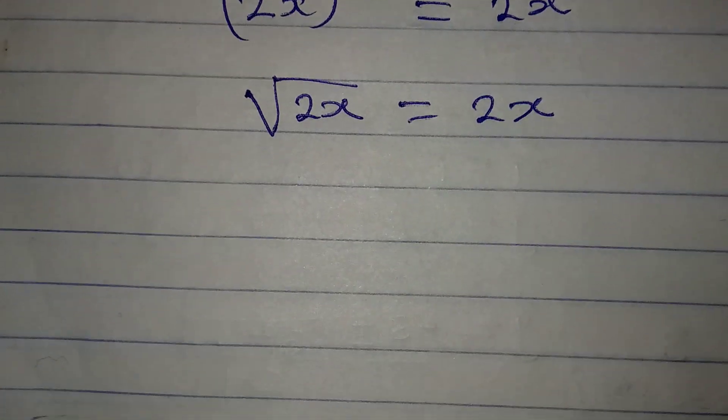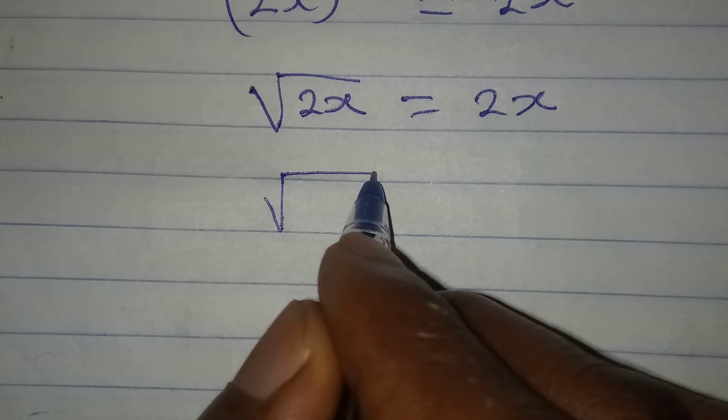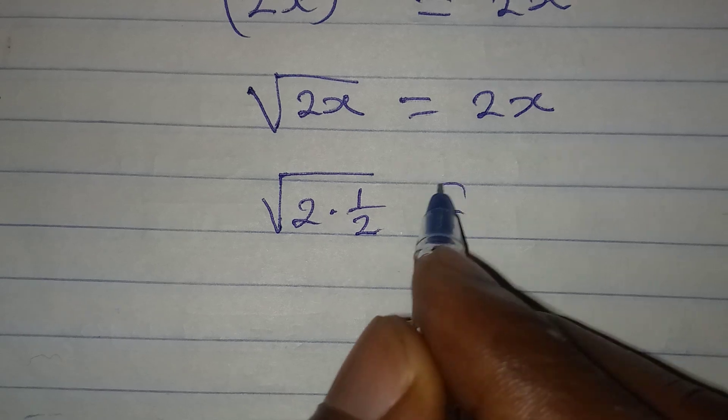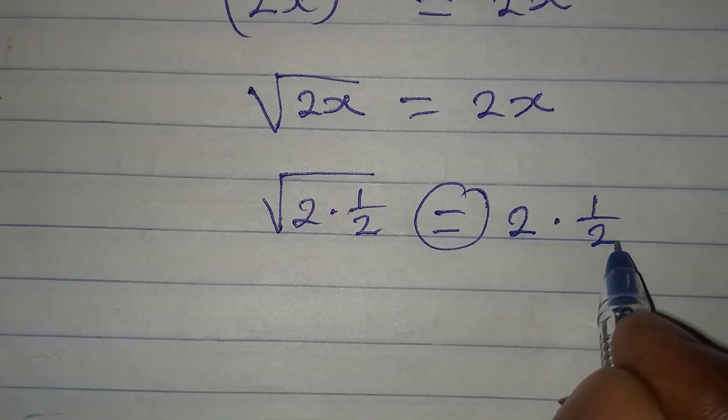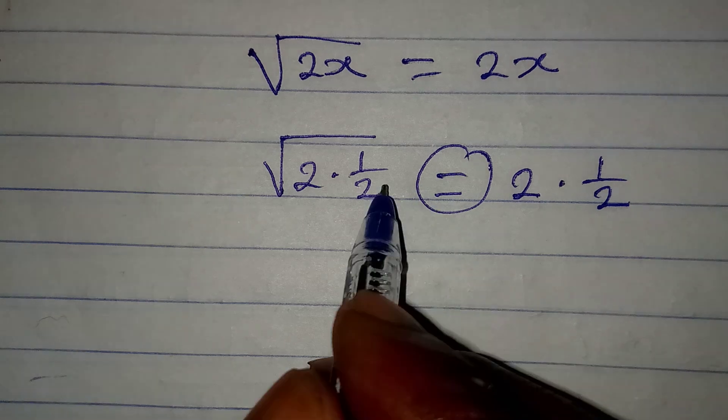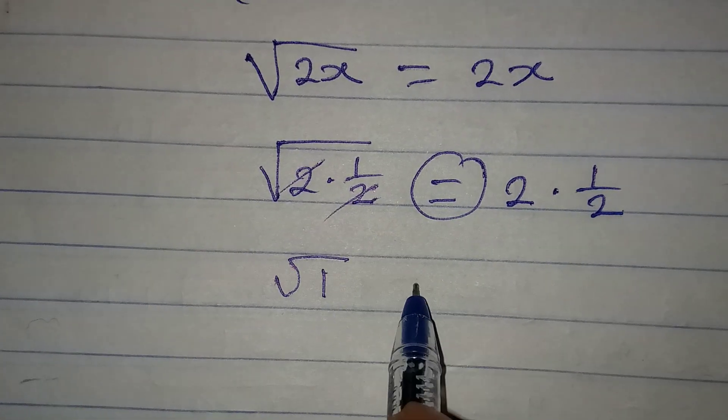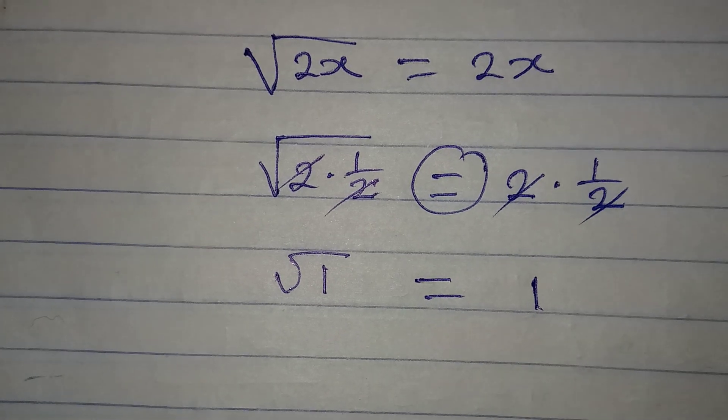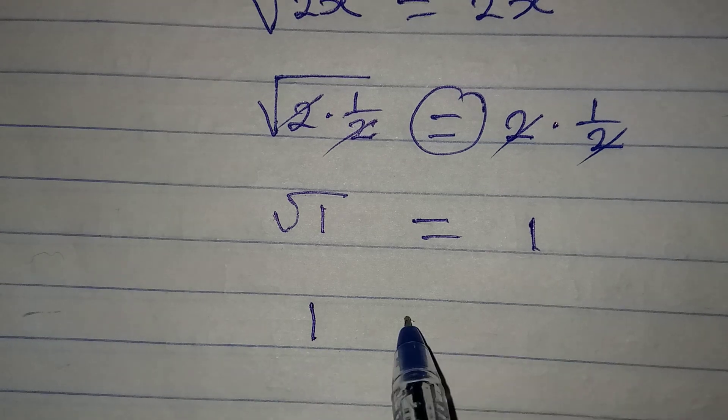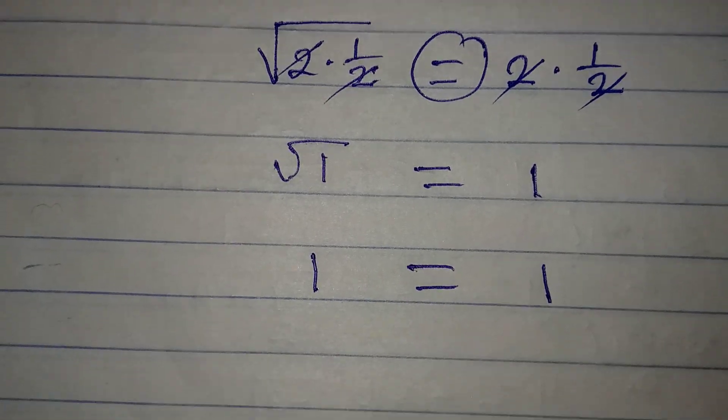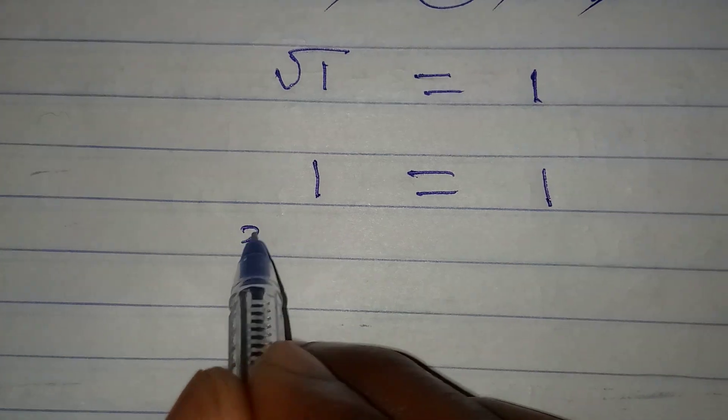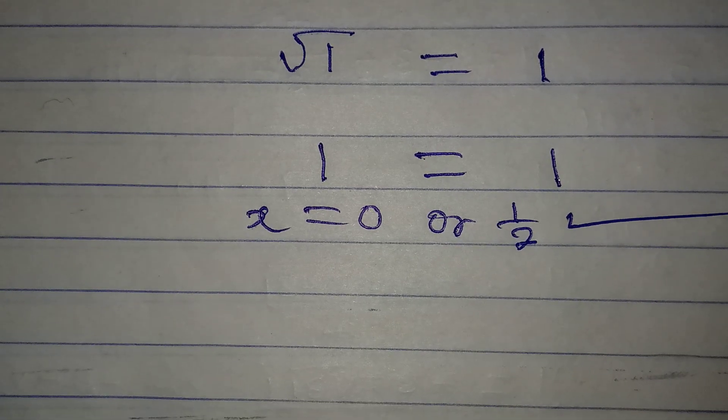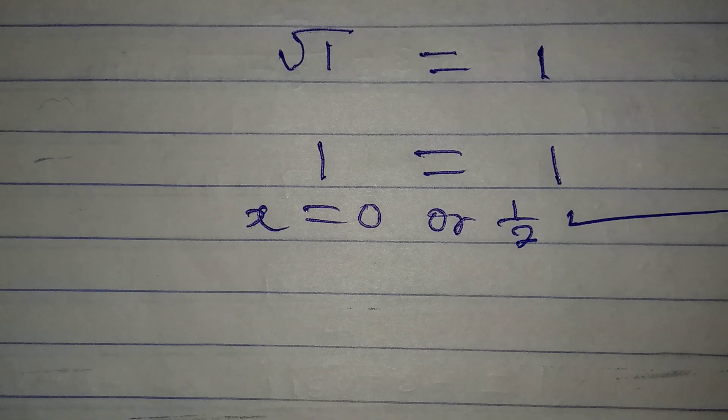Now let's put in 1 over 2. We have 2 times 1 over 2. This will give us square root of 1, and we have square root of 1, and then here we have 1. Square root of 1 is 1, and that is equal to 1 on the right-hand side. So we can conclude that x to be equal to 0 or 1 over 2 is satisfying. Thank you for watching.